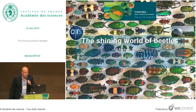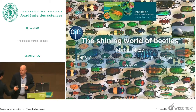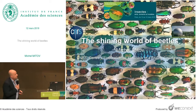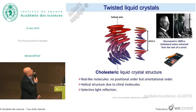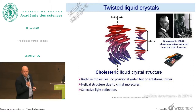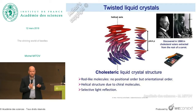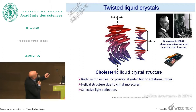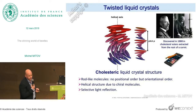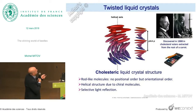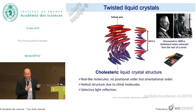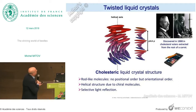Thank you very much for this introduction and thank you to the organizers for the opportunity to present a few aspects about the colors of beetles. I'm currently working in the field of twisted liquid crystals. They have a molecular structure of rod-like molecules without positional order but with orientational order — this association of order and disorder is the main salient feature of liquid crystals. There is a helical structure in a direction perpendicular to the long axis of these molecules due to the presence of chiral molecules, and this medium has the property to selectively reflect light, as we will see for beetles.